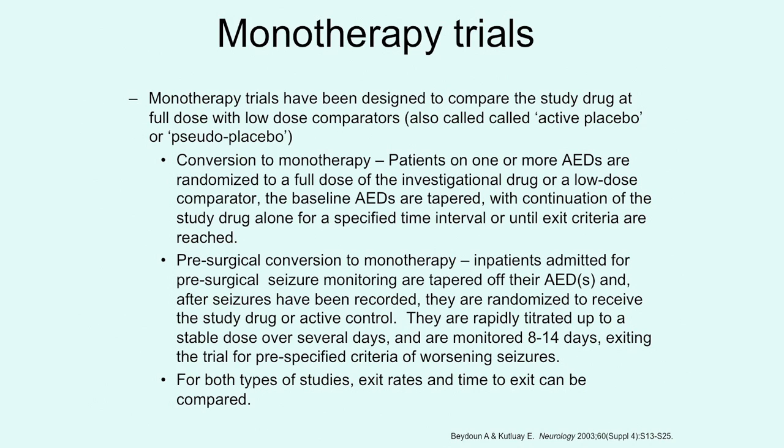There are two types of trials that have been done. The first is a conversion to monotherapy trial, where patients are on their anti-epileptic drugs, the study drug is added, and then they're tapered off their previous drugs and remain on the monotherapy either for a specified interval of time or until they need to exit because of seizures or side effects.